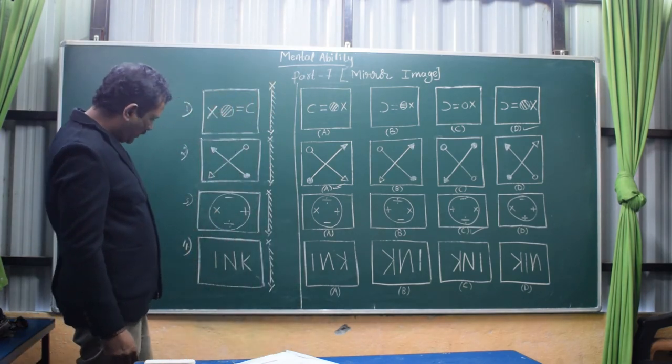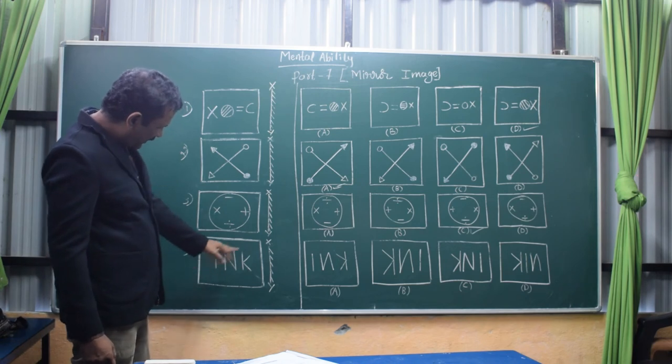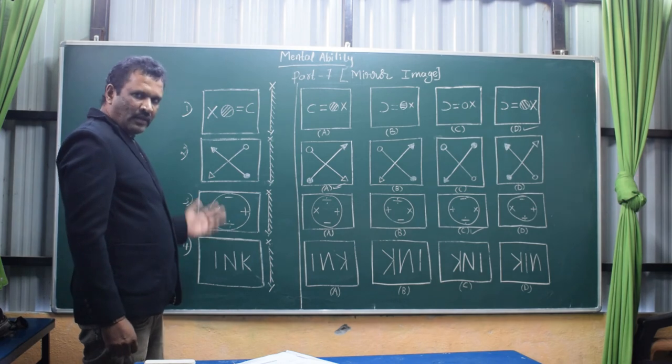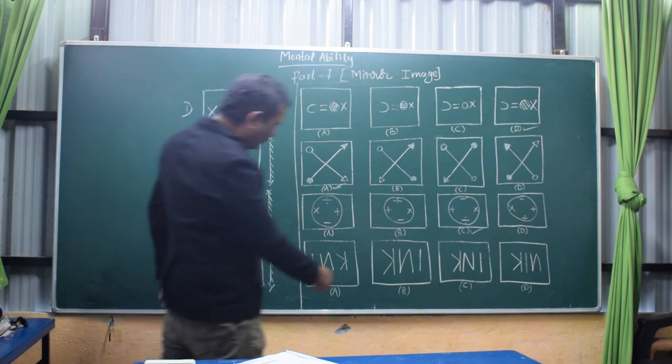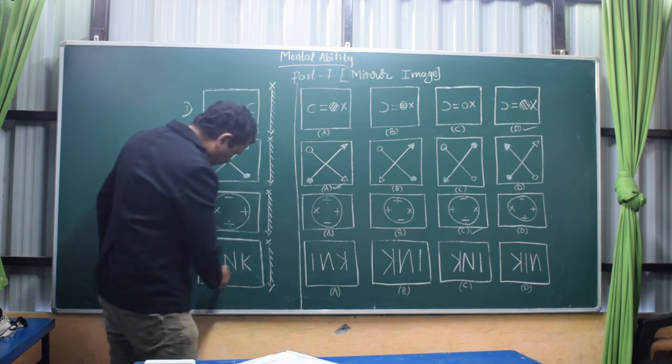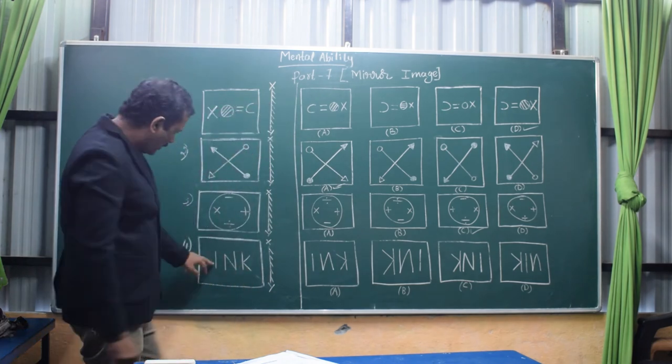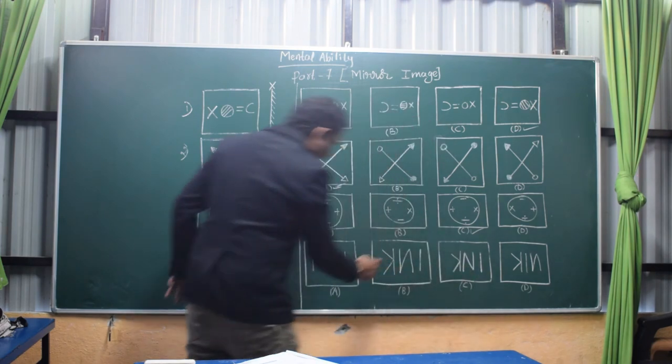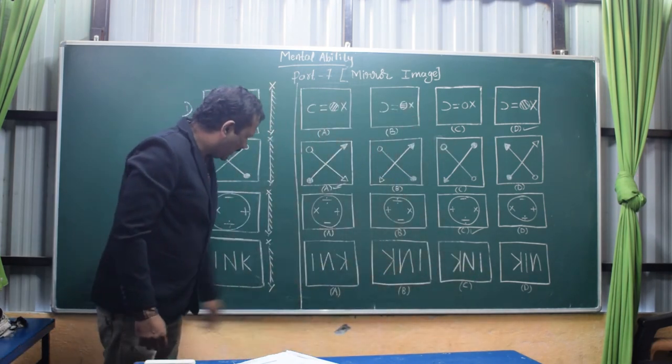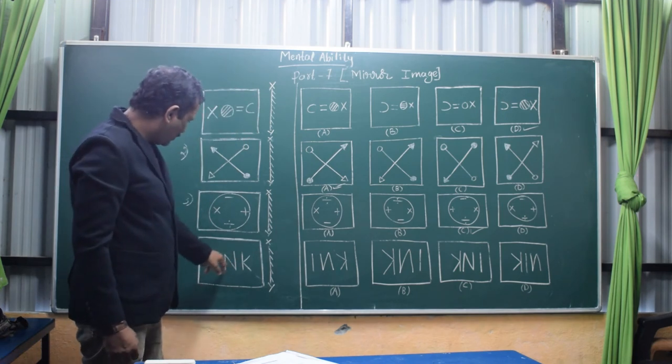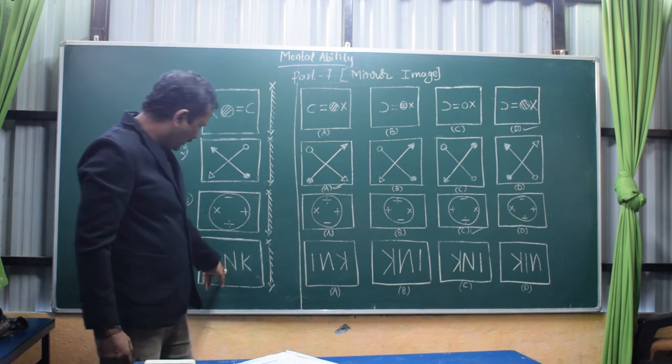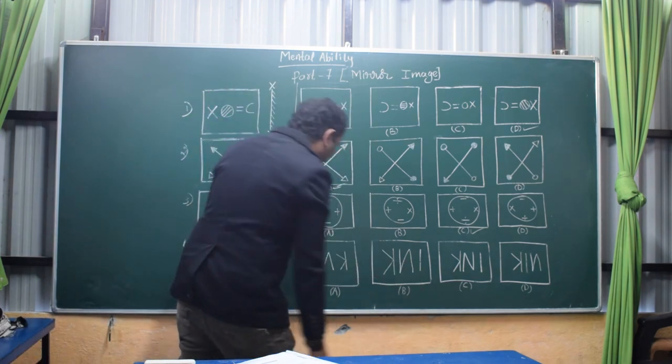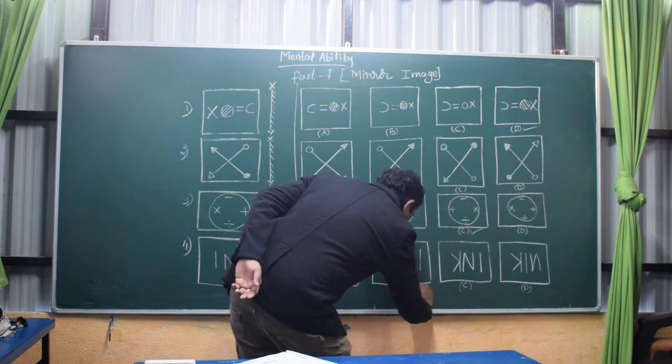Come to question number four. Here some letters are there: I, N, K. Ink. If you see the mirror, all should be seen opposite side. The K should be first, the last letter comes to first position. You just observe which one has K first. In these three pictures K came first, but in this figure we can directly reject this one. After K, N in the reverse position.